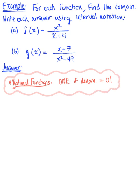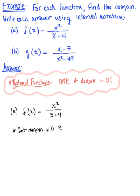Let's think about part A. We have the function f(x) = x² divided by (x + 4). In order to find this domain, we need to set the denominator not equal to zero and solve for x.